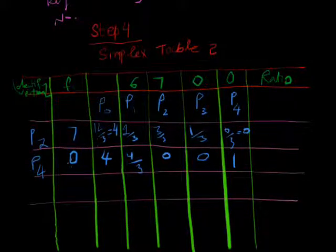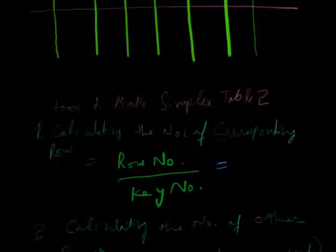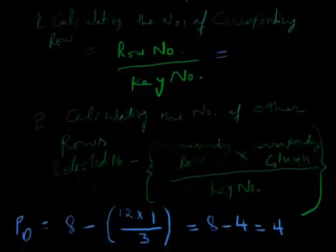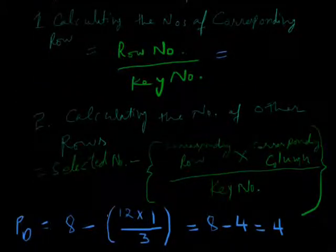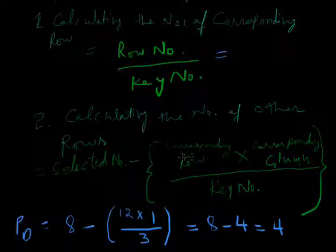So this row will calculate with this formula. I just calculate one number, and all numbers will calculate with the selected number minus corresponding row multiply with corresponding column divide by key number.